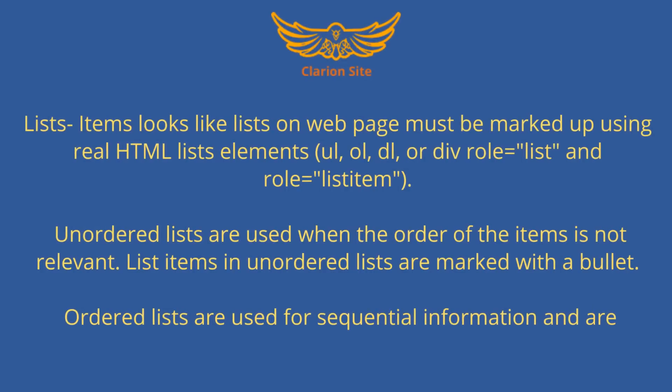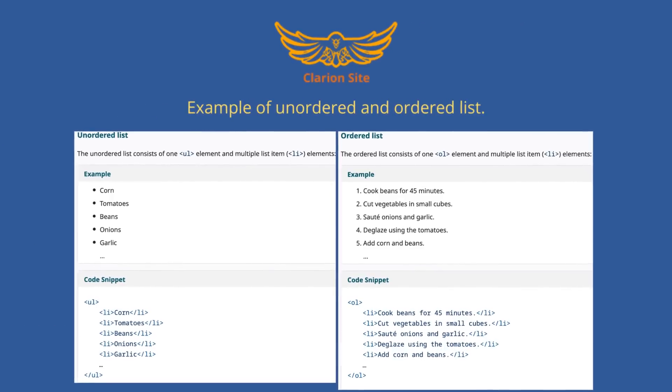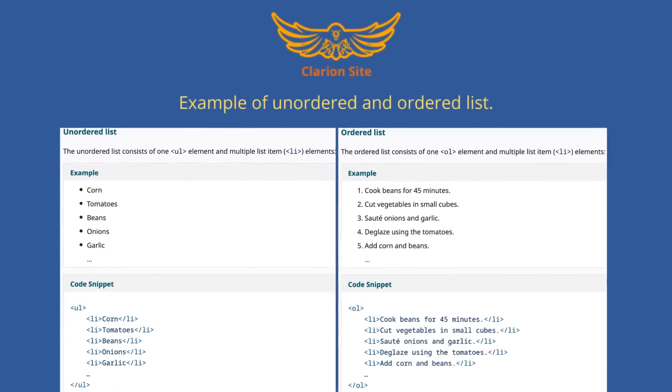Lists. Items that look like lists on a web page must be marked up using real HTML list elements: UL, OL, DL, or div with role equals list and role equals list item. Unordered lists are used when the order of the items is not relevant; list items in unordered lists are marked with a bullet. Ordered lists are used for sequential information and are automatically numbered by the browser.